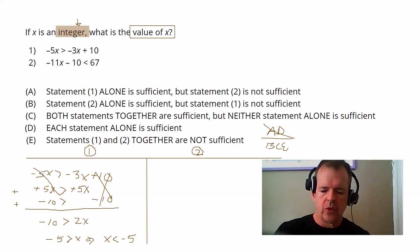We look at statement two, negative 11 X minus 10 is less than 67. These numbers at first glance don't seem to have a lot in common and look pretty terrible, but happily, when we add a 10 to each side, now what we see is negative 11 X is less than 77. And happily, 11 goes into 77.